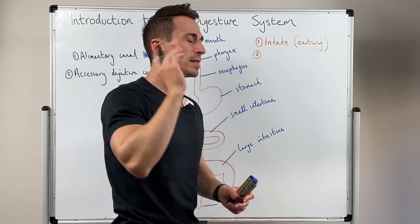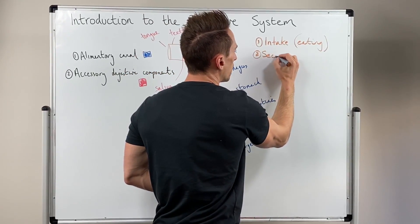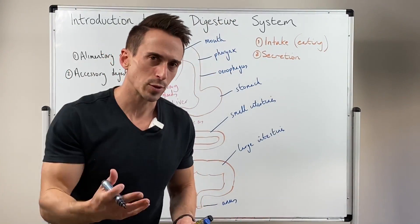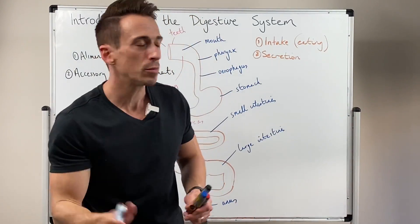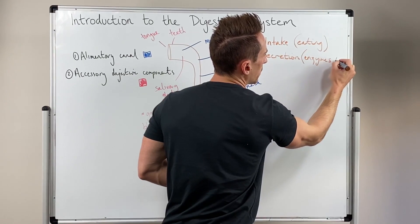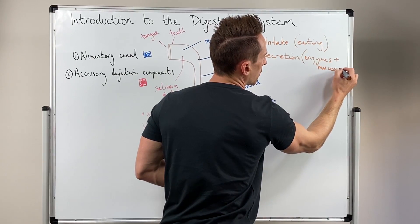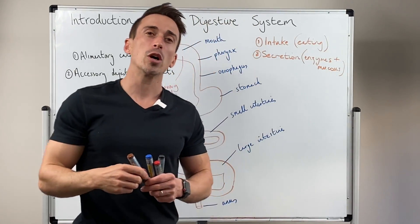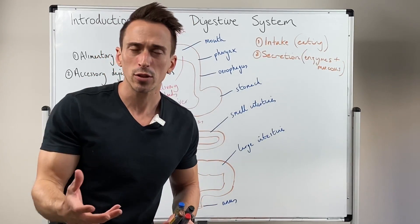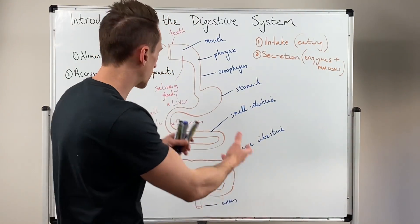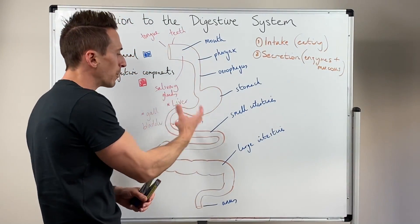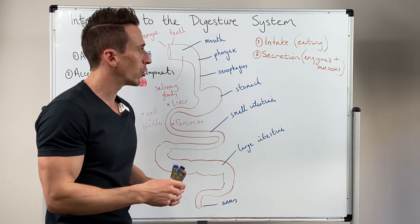The second function we need to talk about is secretion. The digestive system actually secretes substances, and these substances are enzymes and mucus. These enzymes can be digestive enzymes — things that break down proteins, fats, or carbohydrates. The mucus is extremely important because we're going to have substances moving through this alimentary canal, there's going to be friction in this environment, and we don't want to damage the cells of that tissue. So mucus is also very important.